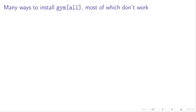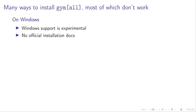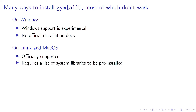we need the package called GYM-ALL. As of 2021, there are many ways to install this package, most of which do not work. Windows is not officially supported and official instructions are non-existent. On Linux and Mac, you do get official installation instructions, but you soon realize that you need to install tons of system libraries, and this list may be different depending on which distro you are using. Luckily there is an alternative way to install GYM using Conda, which is painless and uniform across operating systems and distros.